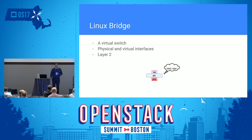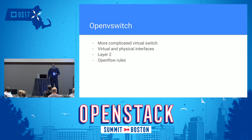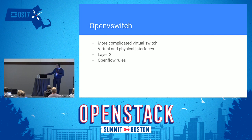Linux bridge is a virtual switch in Linux — the oldest one. You can add physical and virtual interfaces to it; it operates at layer 2, which is MAC addresses. Layer 3 is IPs, layer 4 is where TCP and UDP sit. OpenVSwitch is a more complicated Linux switch. You can add physical and virtual interfaces to it. The big advantage is that you can apply OpenFlow rules on it, which can manipulate traffic at layer 2 within the switch itself, giving it some intelligence beyond simple forwarding.